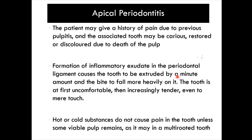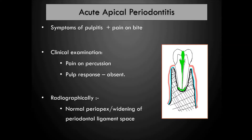There is formation of inflammatory exudate in the periodontal ligament that causes the tooth to be extruded by a minute amount, so the bite may fall more heavily on it. The tooth appears slightly out of the socket and is first uncomfortable, then increasingly tender even to mere touch. Hot or cold substances do not cause pain unless some viable pulp remains, as may occur in a multi-rooted tooth.